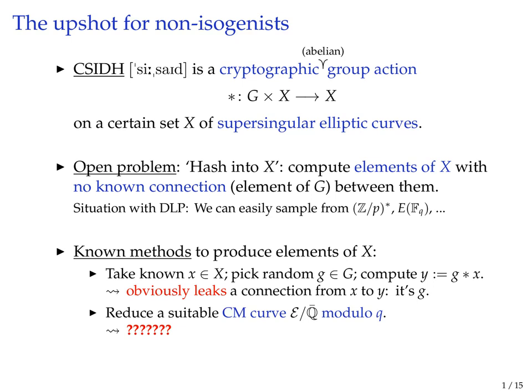The other method is to reduce a certain well-chosen elliptic curve over a number field modulo your prime p. If this curve was chosen well enough, it will be an element of X, and it's not immediately obvious how this new element is connected to the other known elements. If we know a little bit of information about this curve that's reduced modulo p, then we can easily write down what a certain group element is that connects this new curve to some other well-known curve.